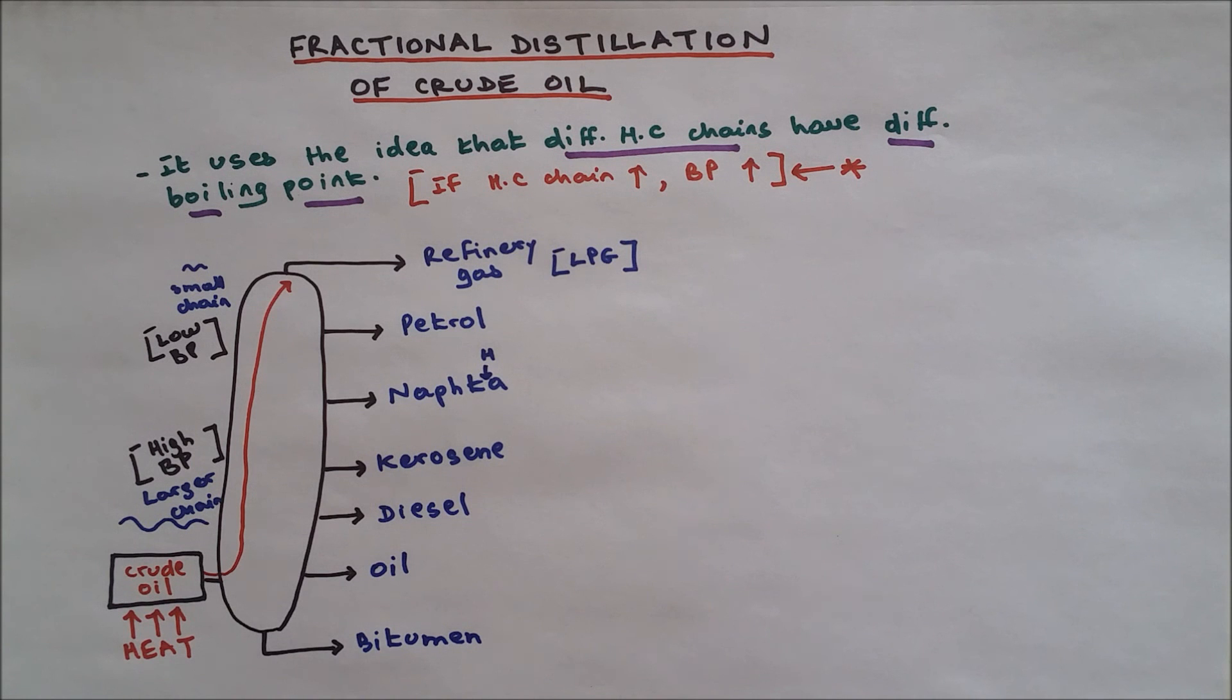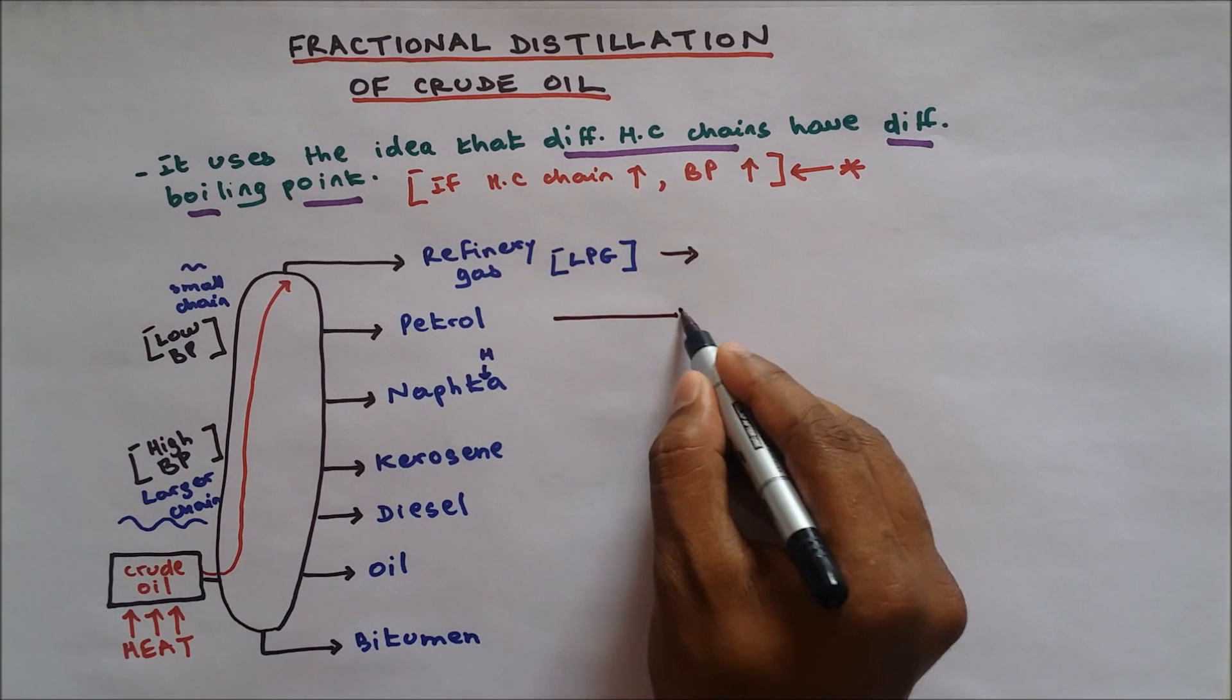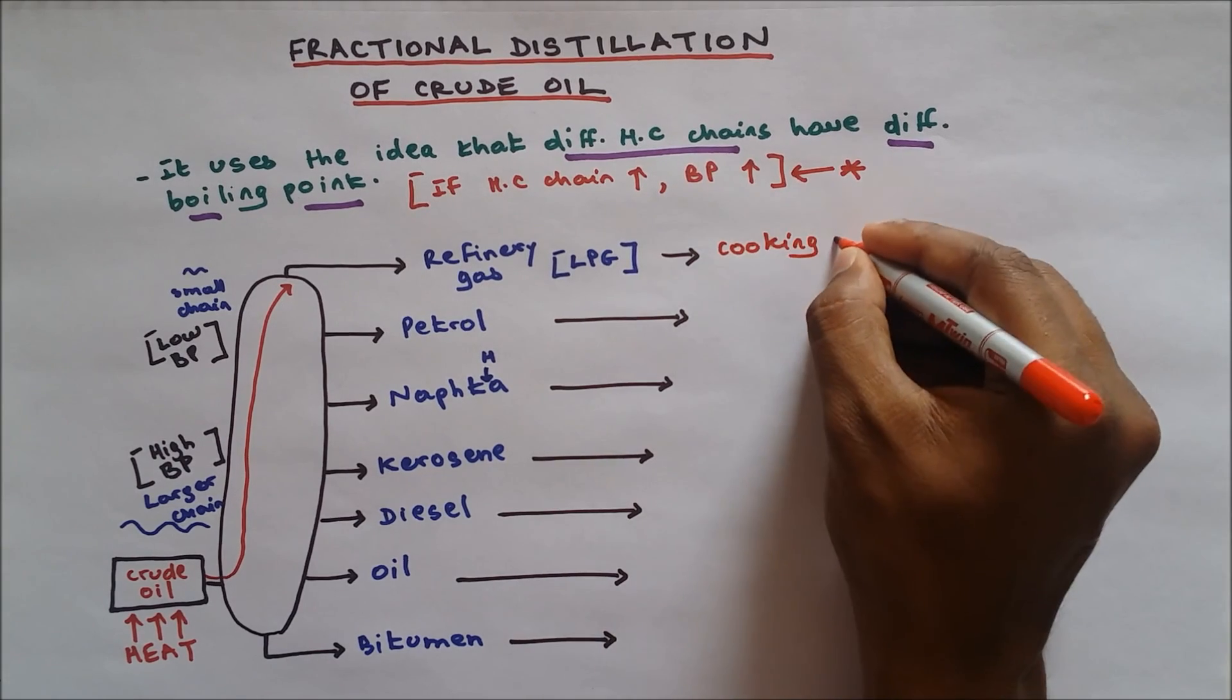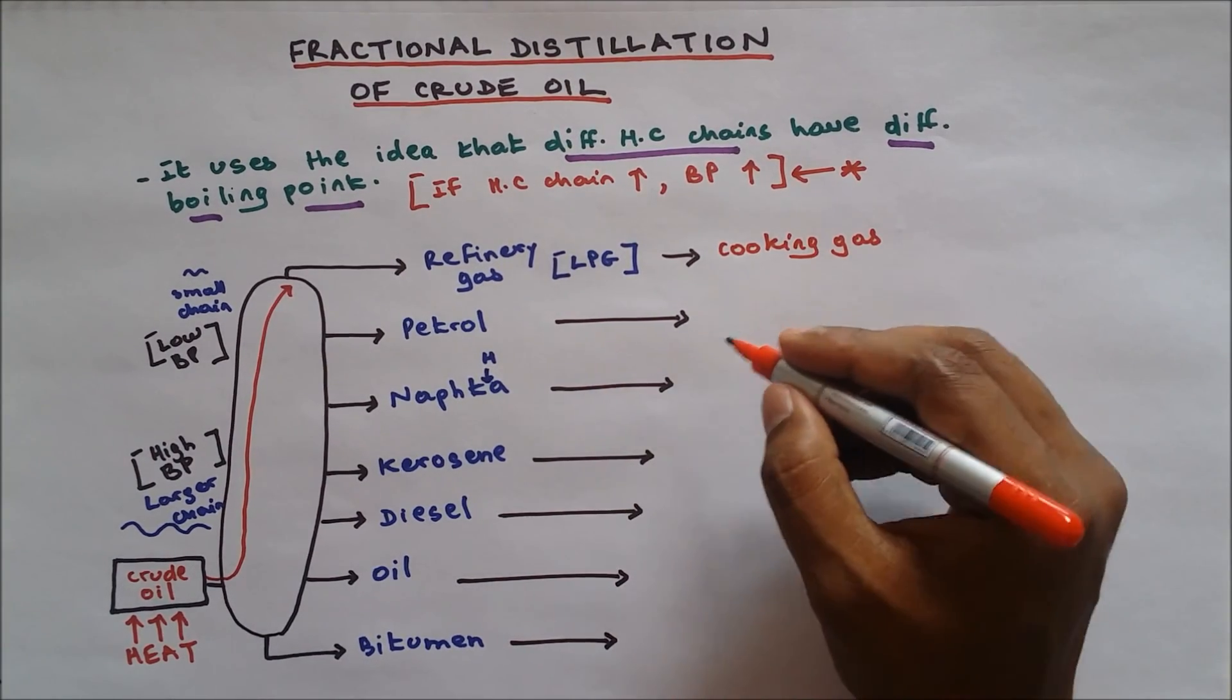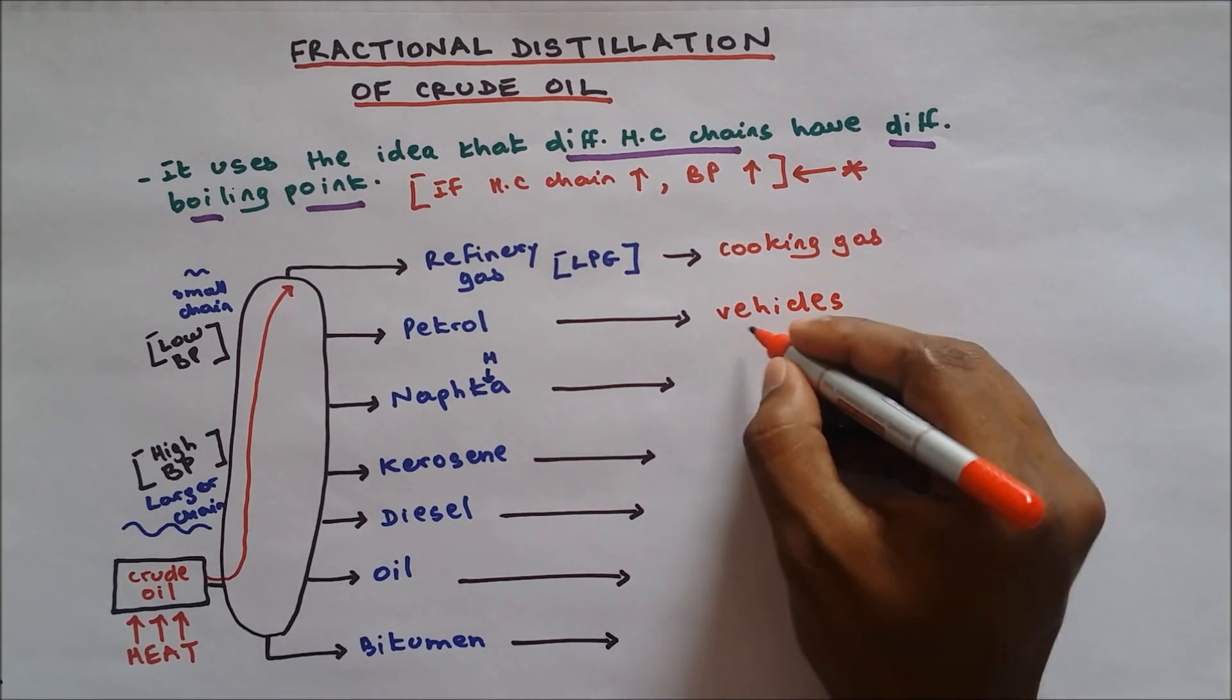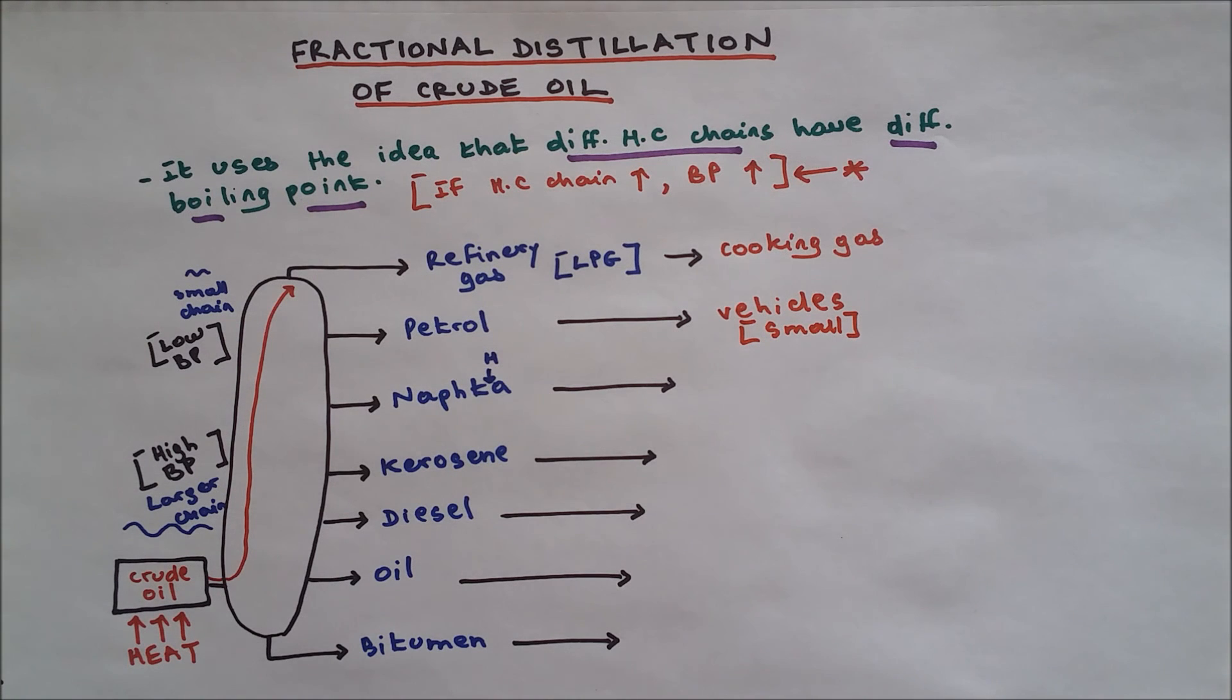Okay, now let's take a look at the uses of these fractions. Refinery gas is used as a cooking gas. Petrol is used in vehicles, but mostly small vehicles, or is used in cars which need high performance.